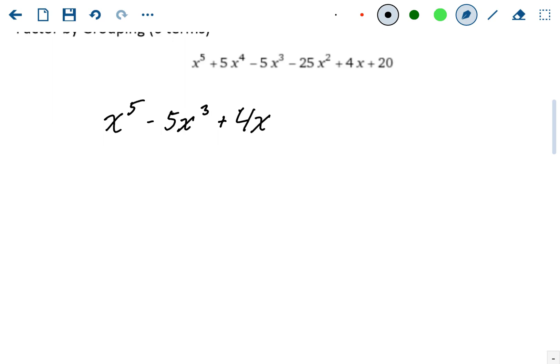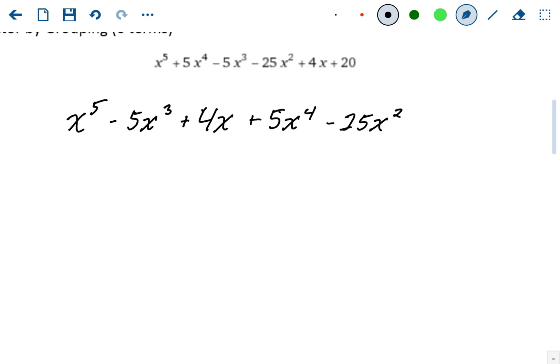Now we write all the even degrees. So that starts with 5x to the fourth, minus 25x squared. Remember, whatever sign is in front of the number stays with that term. And then there's no more evens, but we count the constant as an even term. Degree of zero, I guess. Plus 20.